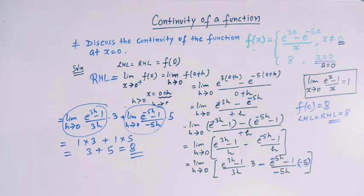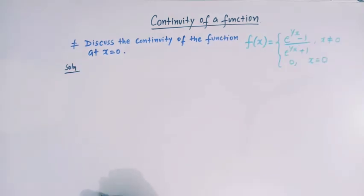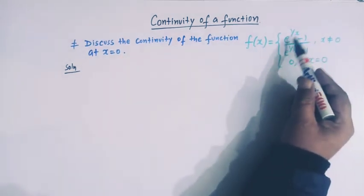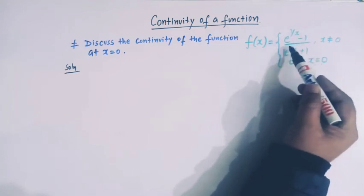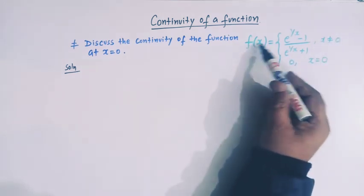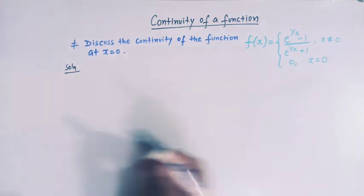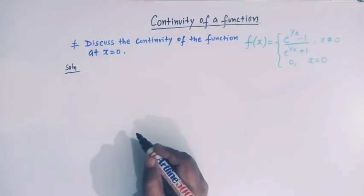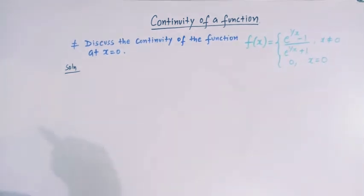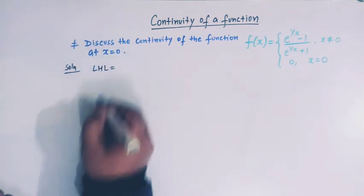Now let us take one more problem. We have to discuss the continuity of the function f(x) = (e^(1/x) - 1) / (e^(1/x) + 1) when x is not equal to 0, and the value of the function at x equal to 0 is given as 0. Again, we will find the left hand limit, the right hand limit, and compare them with f(0).